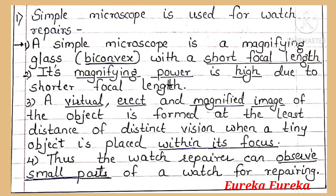A simple microscope is a magnifying glass, that is a bi-convex lens with a short focal length. Secondly, its magnifying power is high due to its shorter focal length.